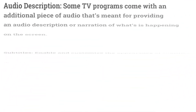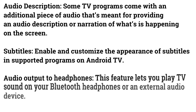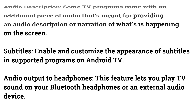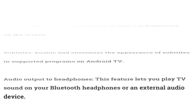Audio Description: some TV programs come with an additional piece of audio that's meant for providing an audio description or narration of what's happening on the screen. Subtitles: enable and customize the appearance of subtitles on supported programs on Android TV. Audio Output to Headphones lets you play TV sound on your Bluetooth headphones or an external audio device.